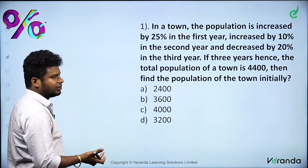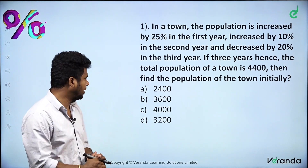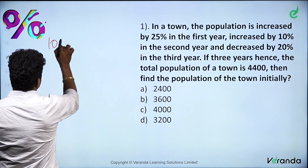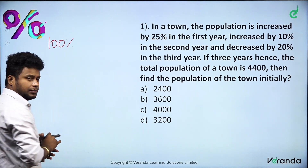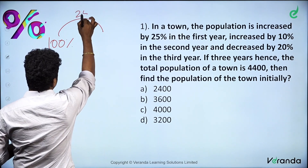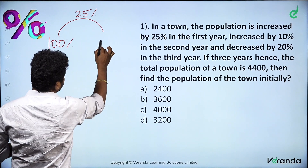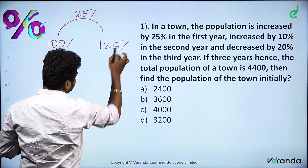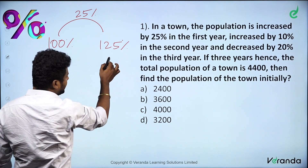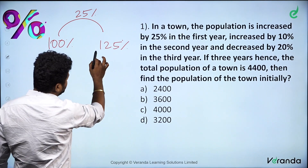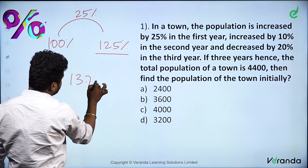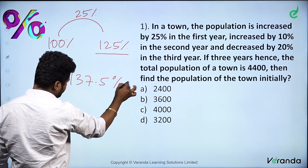You can tell how we can solve it using the logical method and the conventional method. So first of all, logical method: how to solve? We start with 100% people. In these 100% people, there is a 25% increase, so it becomes 125%. Then there is a 10% increase.